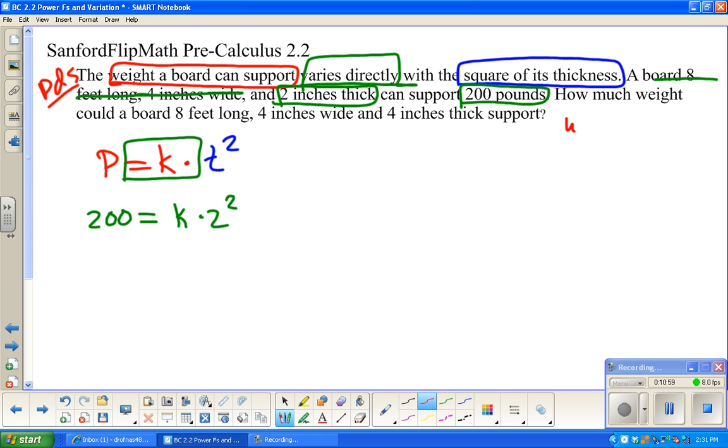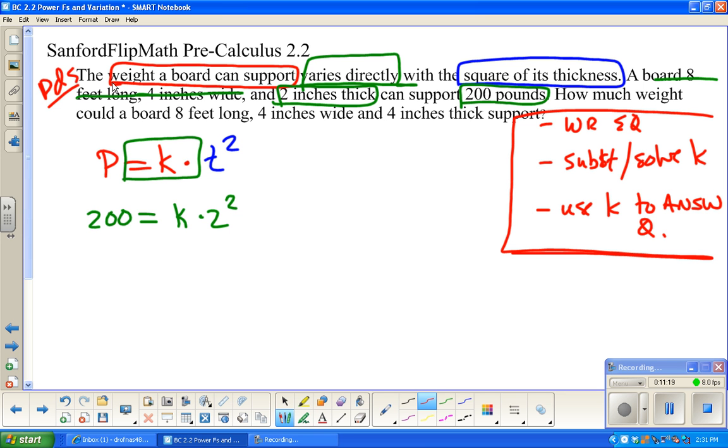Well, the only thing I don't know is k, and so what happens here is, we're going to write the equation with just variables. We're going to substitute what we know and solve for k. Then we're going to use the k to answer the next question. So this is kind of like the overall plan, because what just happened was, I gave you enough information to find k. So, 200 equals k times 4, so 2 squared is 4. So, k must be 50.